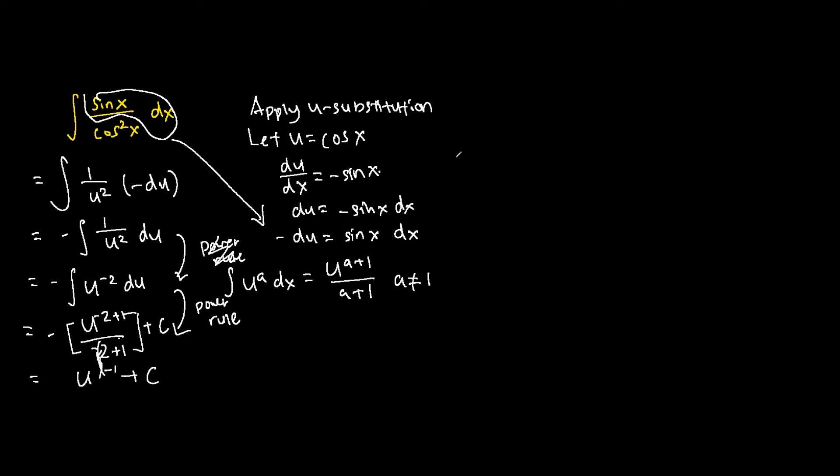And this is the same as 1 over u plus c. Last but not least, we substitute u equals cos x back into the question because the question is in terms of x. So we have 1 over cos x plus c. And 1 over cos x is the same as sec x plus c.